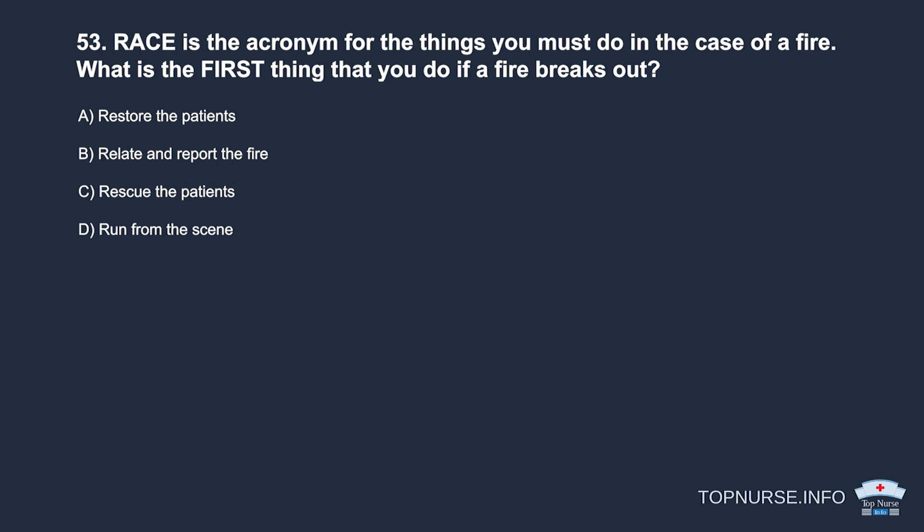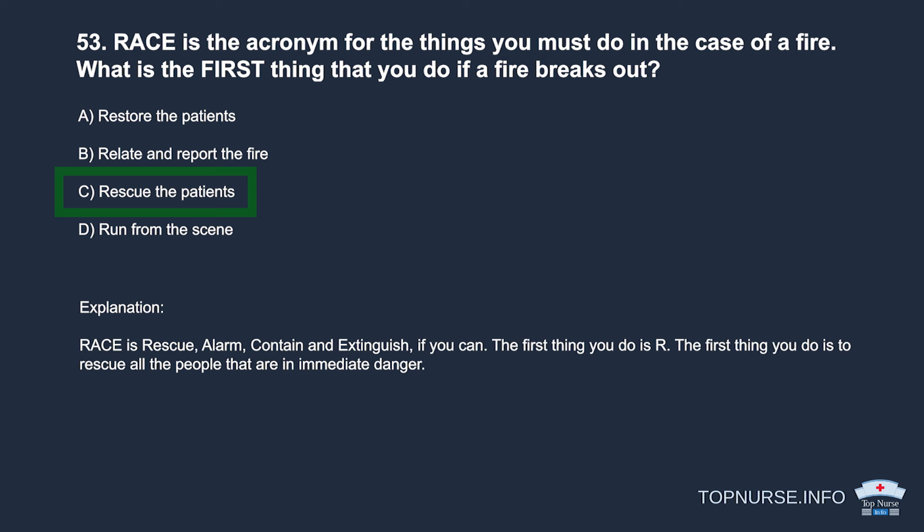Question 53: RACE is the acronym for what to do in the case of a fire. What is the first thing you do if a fire breaks out? a. Restore the patients. b. Relate and report the fire. c. Rescue the patients. d. Run from the scene. Correct answer: c. Rescue the patients. RACE stands for Rescue, Alarm, Contain, and Extinguish. The first thing you do is rescue all people who are in immediate danger.